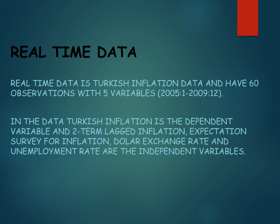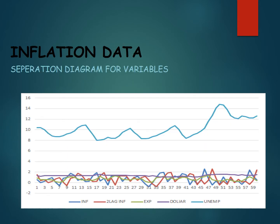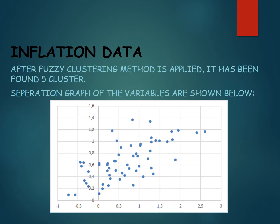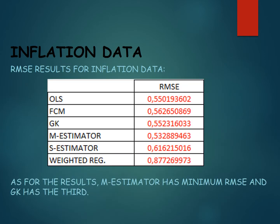The real-time data is Turkish inflation data with 60 observations and five variables, from January 2005 to December 2009. Turkish inflation is the dependent variable, and the independent variables are two-term lagged inflation, expectation survey for inflation, dollar exchange rate, and unemployment rate. After fuzzy clustering is applied, five clusters are found. The RMSE results for the inflation data are given in the table.